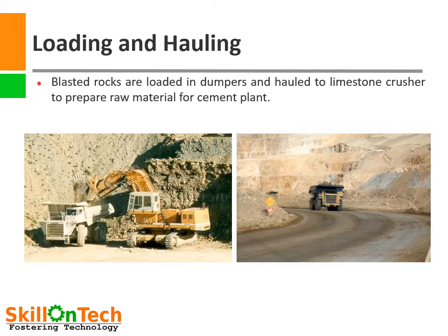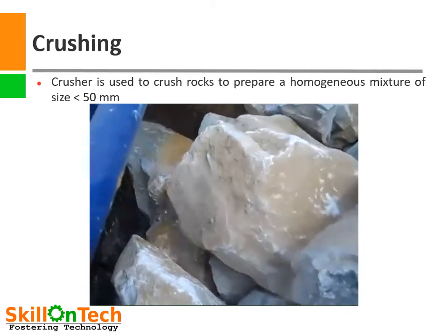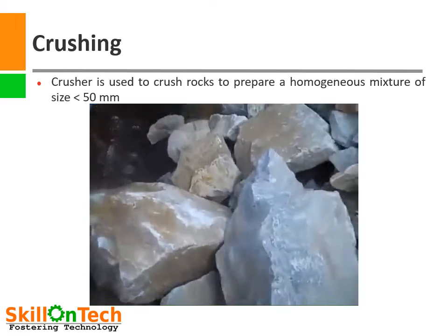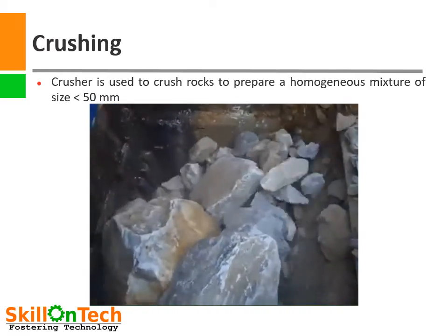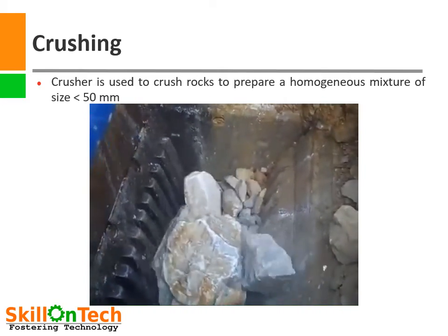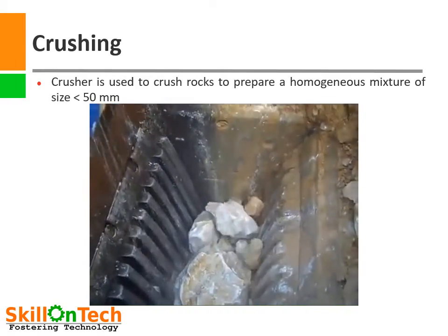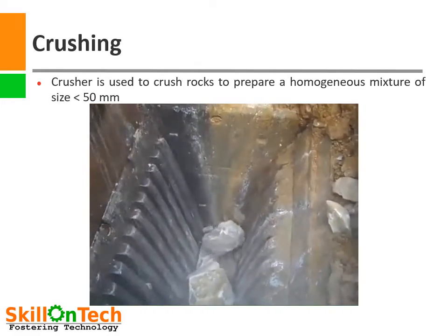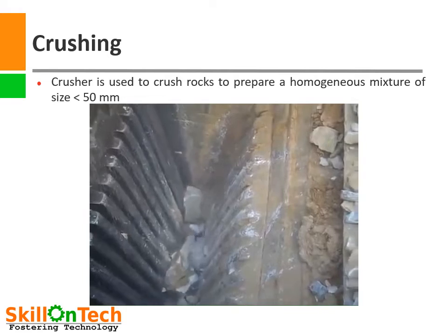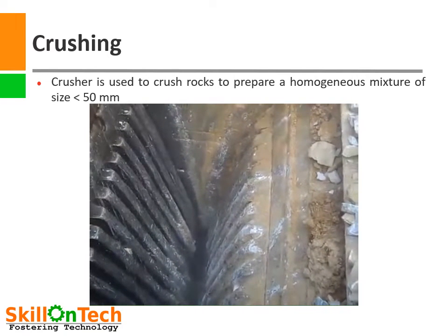Blasted rocks are loaded in dumpers and hauled to a limestone crusher to prepare raw material for the cement plant. These dumpers have to run for several kilometers on very uneven terrain in loaded conditions, and hence they are a huge source of cost in diesel and maintenance. As blasted rocks are a very heterogeneous mixture of rock sizes from powder to more than 1 meter, they are crushed to a size less than 50 mm in large crushers. These crushed materials are then transported to the cement plant for making stockpiles.